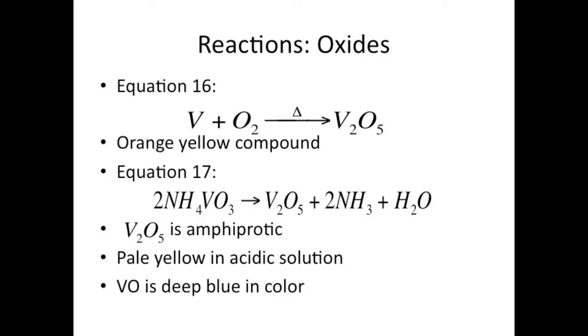Vanadium-5 oxide forms when vanadium metal is heated in the presence of excess oxygen, an orange-yellow compound will be yielded. Heating ammonium metavanadate could also yield vanadium-5 oxide, water and ammonia. The structure of vanadium-5 oxide is quite complicated, but they found that it consists of VO5 that has geometry of trigonal bipyramidal.